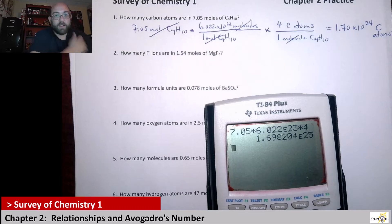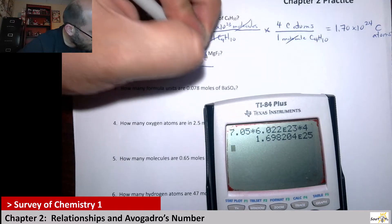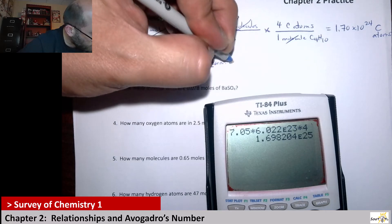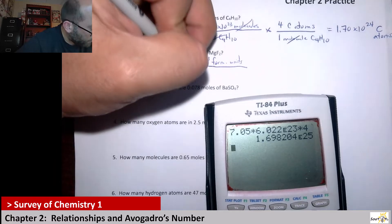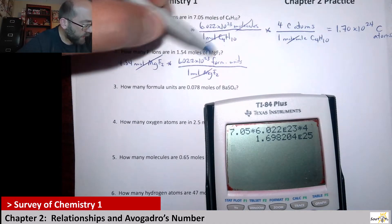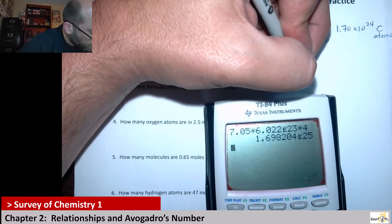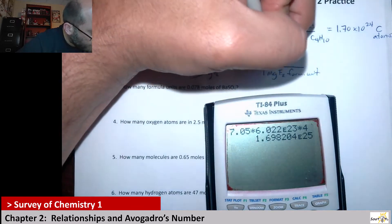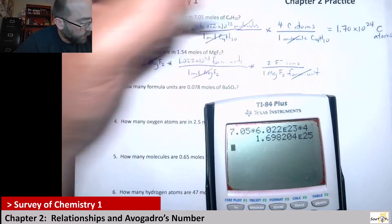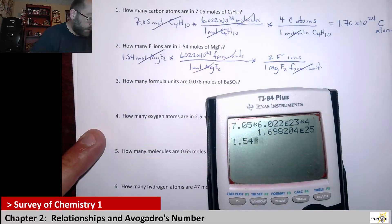So let's start with 1.54 moles of MgF2. We've got Avogadro's number — 6.022 times 10 to the 23 formula units — in 1 mole of MgF2. That allows mole to cancel. Then we know there are two fluoride ions for every one formula unit, so 1 MgF2 formula unit has two fluoride ions. The formula units cancel, so I'm looking at 1.54 times 6.022 times 10 to the 23 times 2.